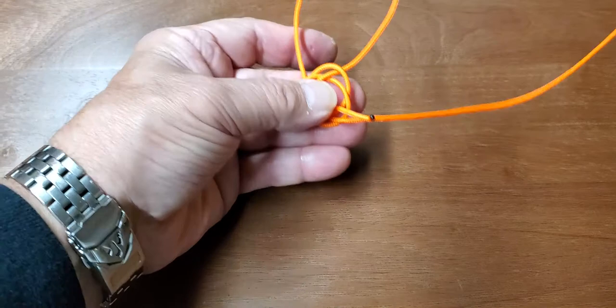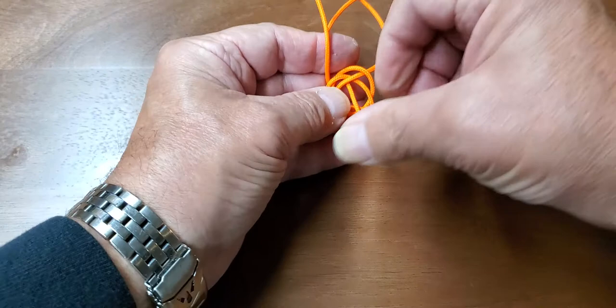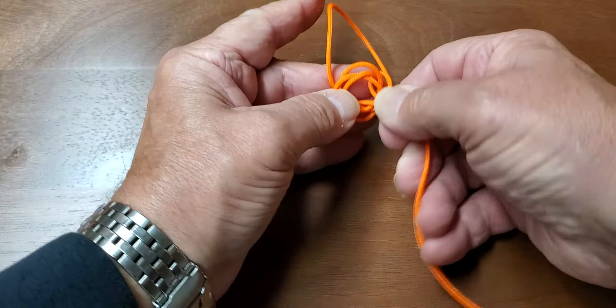Now I'm going to take the long end and I'm going through the loop here, the big loop, and out the diamond. Take out the slack.